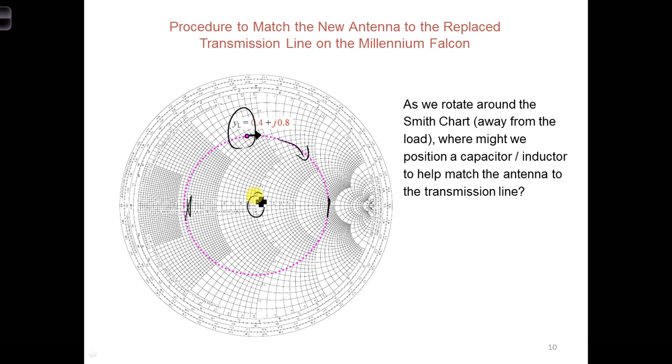However, realizing that we can't change the real part of the input impedance using a capacitor or an inductor, then where do we want to stop as we rotate around the Smith chart? Where might there be a location where the real part of the admittance is equal to one?